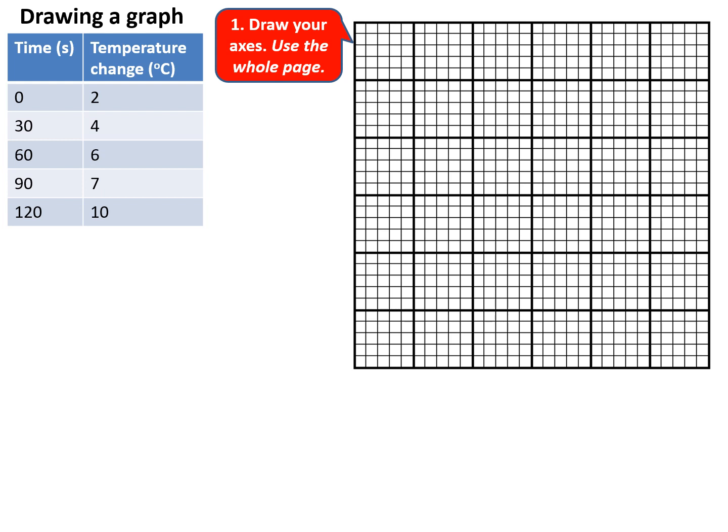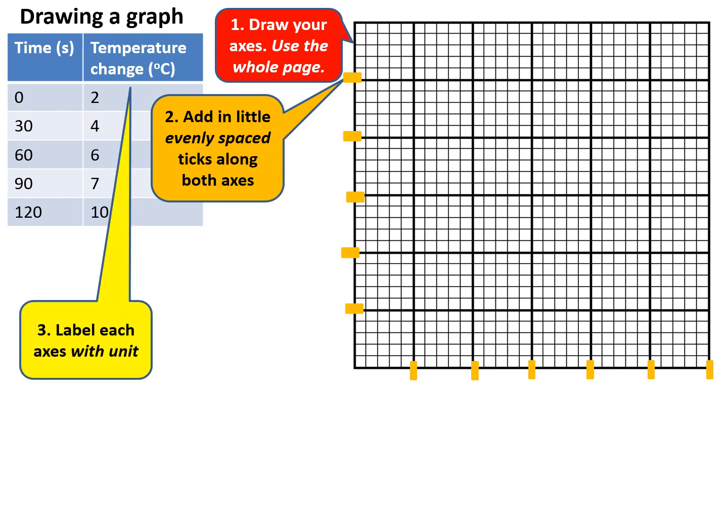First, draw your axes. When plotting data, use the entire page because if you use only a small area, you won't see smaller changes. Second, add even spaces - use your grid and divide it evenly. These yellow blocks show even division. Next, label each axis with units to get maximum marks.